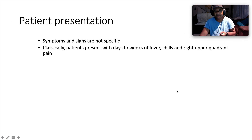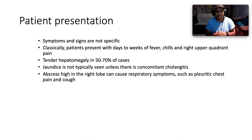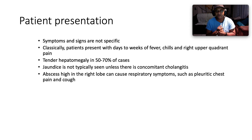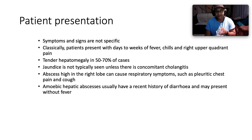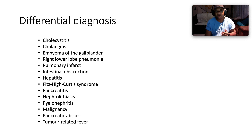Signs and symptoms are not very specific. Classically, patients present with days to weeks of fever, chills, and right upper quadrant pain, with tender hepatomegaly in 50–70% of cases. Some may present with shoulder pain because C3–C5 innervates the diaphragm, and diaphragmatic irritation can cause referred pain to the lateral shoulder. Jaundice is not typically seen unless there is concomitant cholangitis. Abscesses high in the right lobe can cause respiratory symptoms such as pleuritic chest pain and cough. Amoebic hepatic abscesses usually have a recent history of diarrhea and may present without fever.